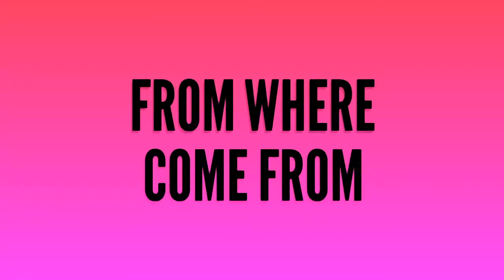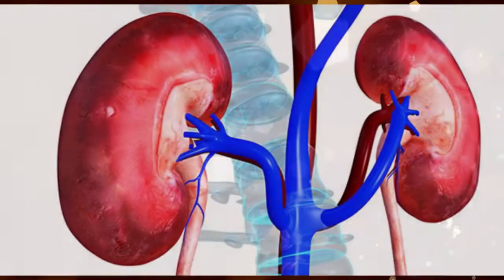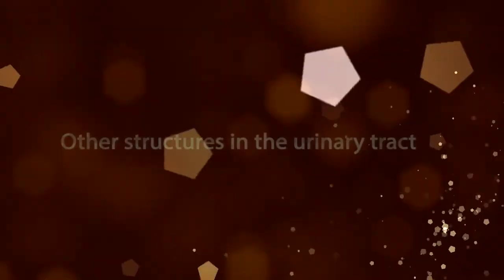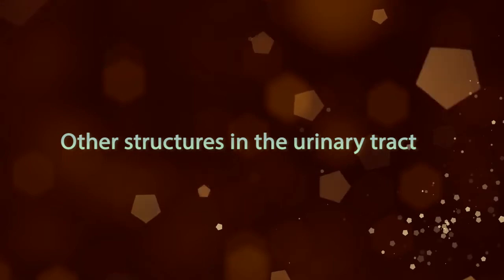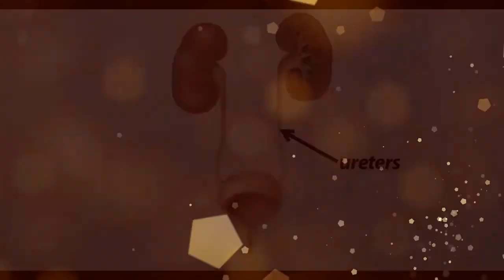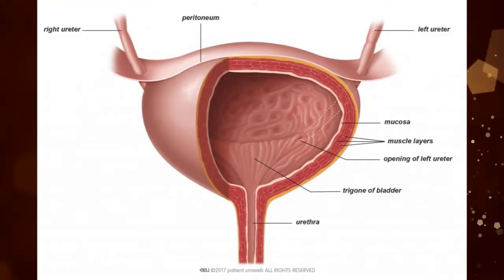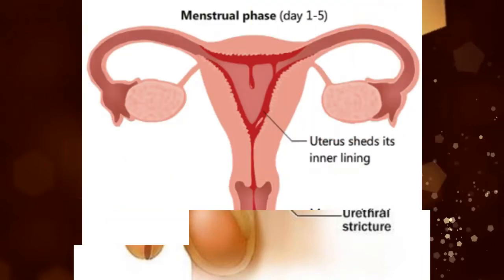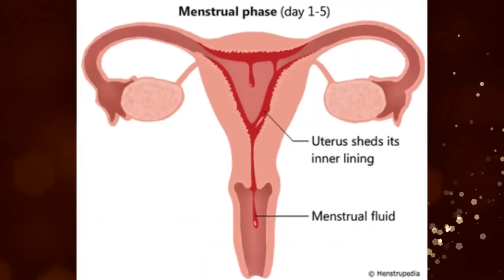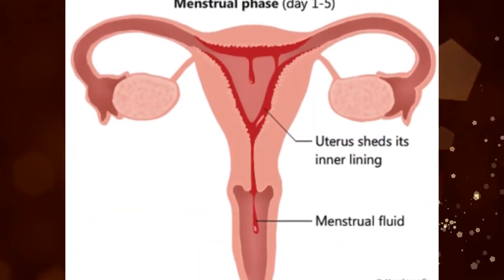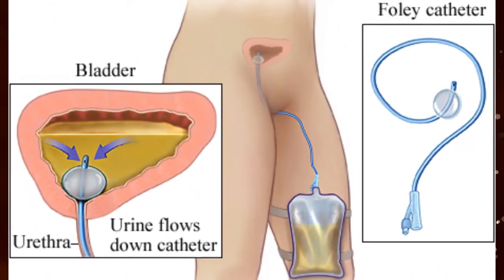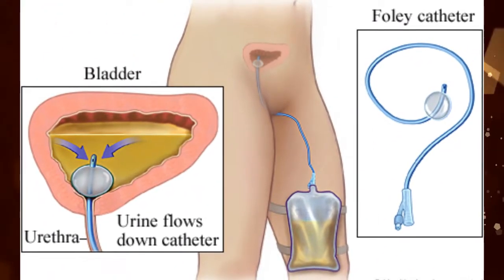From where might blood come from? Blood in urine can come from the kidneys and other structures in the urinary tract, such as ureters, bladder, and urethra. Also, red blood cells can enter the urine as contamination from the vagina during menstruation, or from the trauma of bladder catheterization.